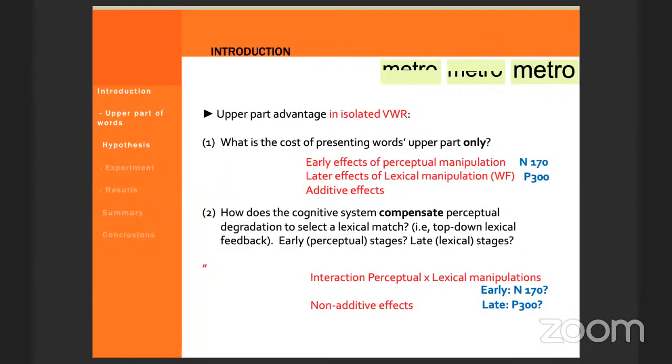So here we tracked the electrophysiological signature of the upper part advantage in words of different frequency. This allowed us to assess the time course of the perceptual manipulation, upper versus full, and the time course of the lexical manipulation, such as word frequency. The perceptual manipulation would impact the early stages of visual automatic processing, which are associated with the N170 component. In contrast, the word frequency manipulation was expected to impact later lexical semantic stages of processing, such as the P300.